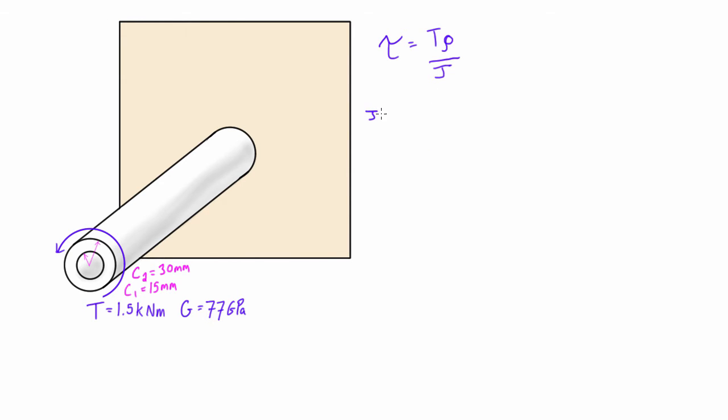So to get started, let's figure out what our polar moment of inertia is. Our formula is J = π/2 times (c2^4 - c1^4). Where we were dealing with solid circular rods we were just setting c1 to be equal to 0, but in this case we actually have a value for c1. So now we have π/2 times c2 to the power of 4, so this is 0.03 meters to the power of 4, minus 0.015 meters to the power of 4.